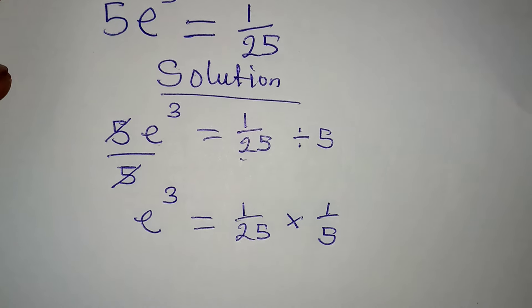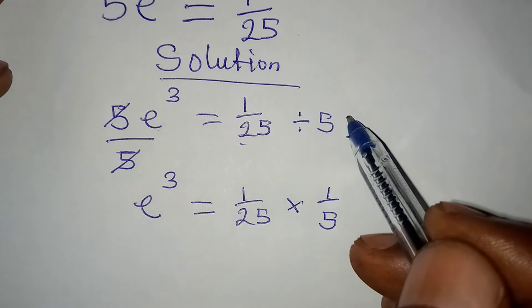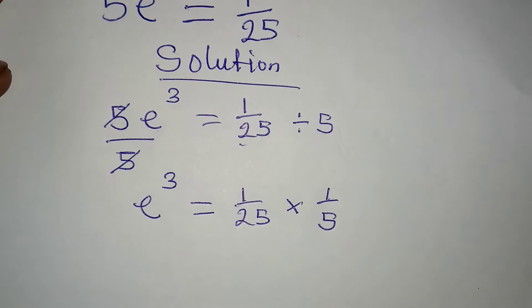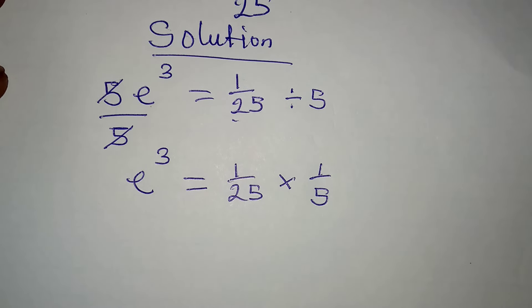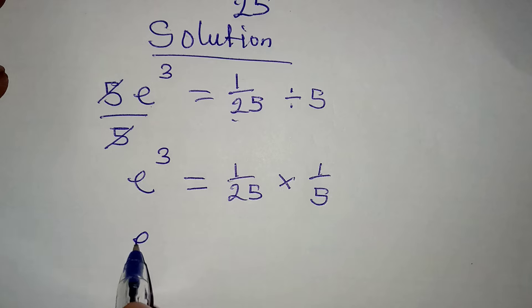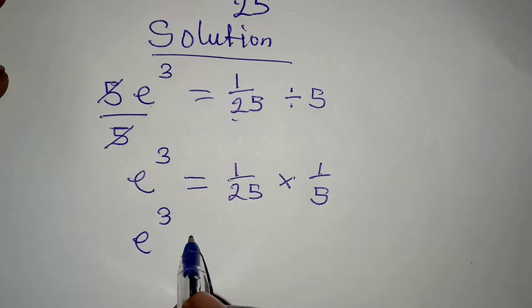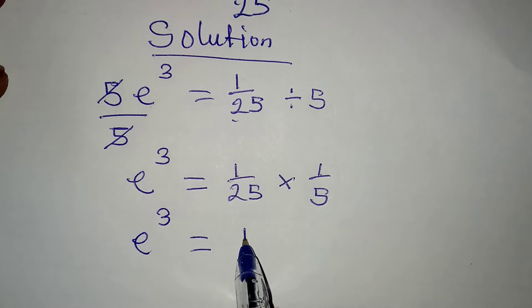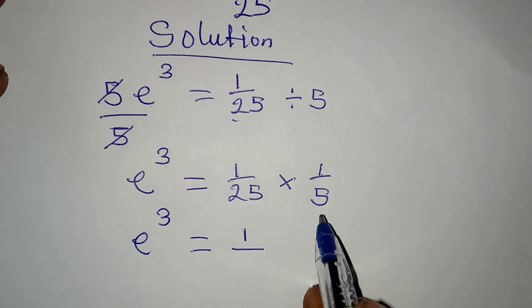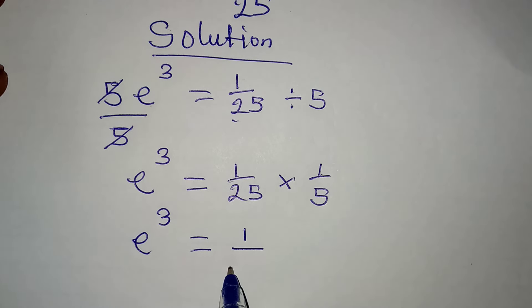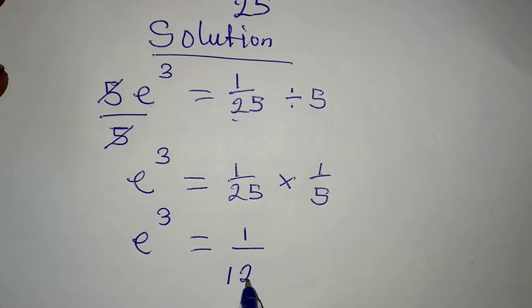Remember, when I turn this to multiplication, I have to take the inverse of 5 there or the reciprocal of 5. So e to the power of 3 is now equal to 1 all over 25 times 5 and it is 125.